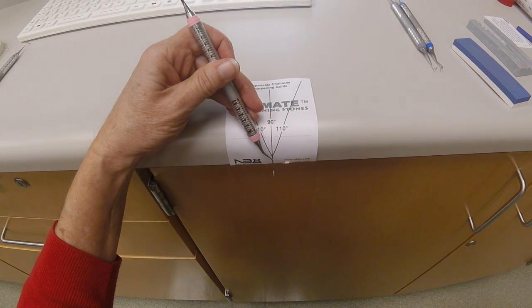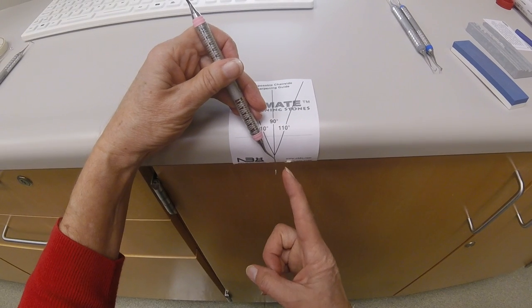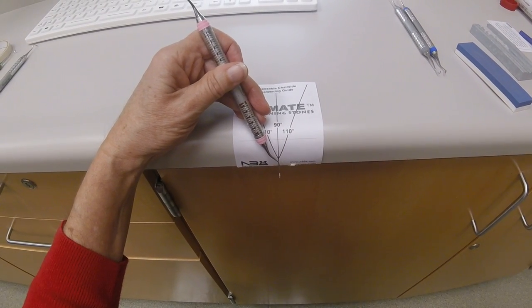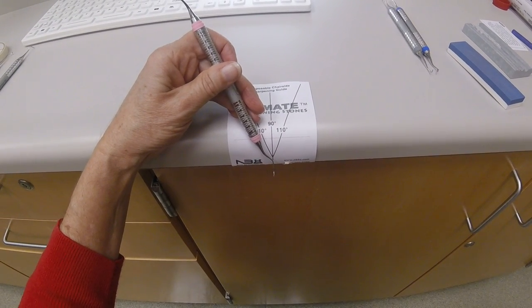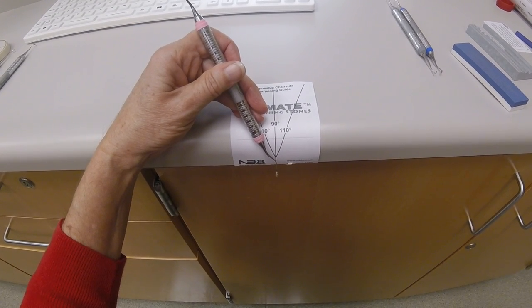Find the lower cutting edge first, positioning the instrument against the countertop so that the terminal shank is at a 90 degree angle to the sharpening guide.